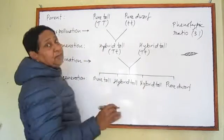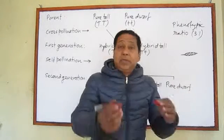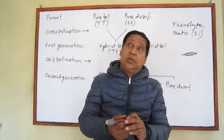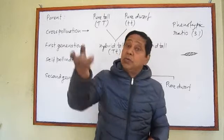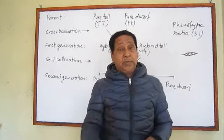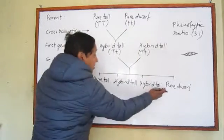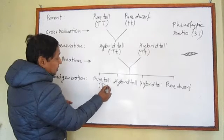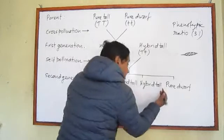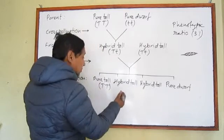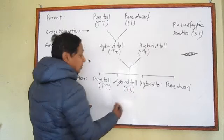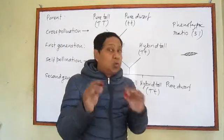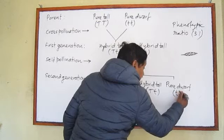He further checked the third generation. Out of the 75% tall plants, he checked whether they all produce only tall offspring or dwarf as well. He found that 25% of the total gives only tall offspring — meaning their genotype must be pure tall (TT). The remaining 50% produced both tall and dwarf offspring, meaning their genotype must be heterozygous. The 25% that were dwarf gave only dwarf offspring, meaning their gene must be pure dwarf.